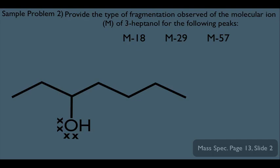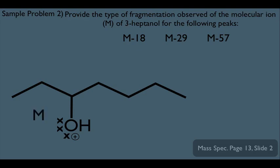Let's talk about some of the ways that this molecule can fragment. We'll start with thinking of our electron beam dislodging this electron right here, and this would be the corresponding molecular ion. Let's designate him as M.